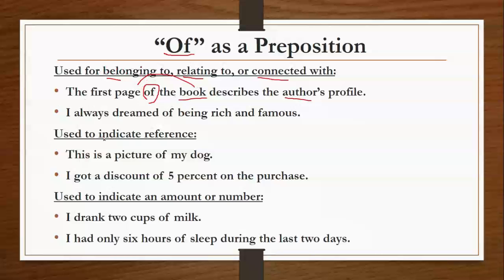'I always dreamed of being rich and famous.' किस चीज का dream किया है? हमने rich और famous होने का। इन दोनों ही statements के बीच में एक relation है, इसलिए हमने यहाँ पर 'of' का use किया है।